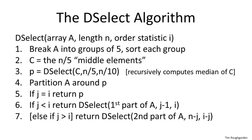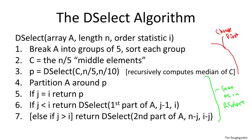We partition A around the pivot, get a first part and a second part, and recurse on the left or right side depending on whether the pivot is less than or bigger than the element we're looking for. The claim is, believe it or not, that this algorithm runs in linear time.